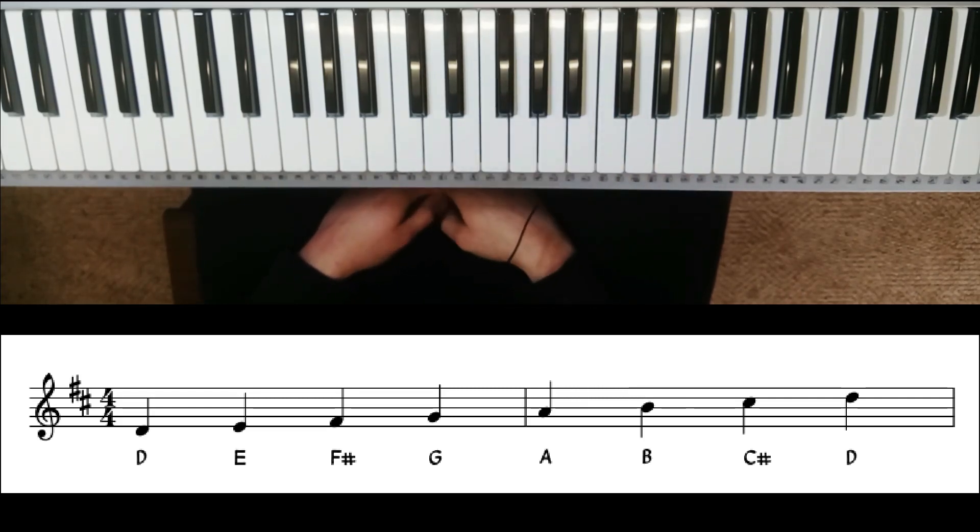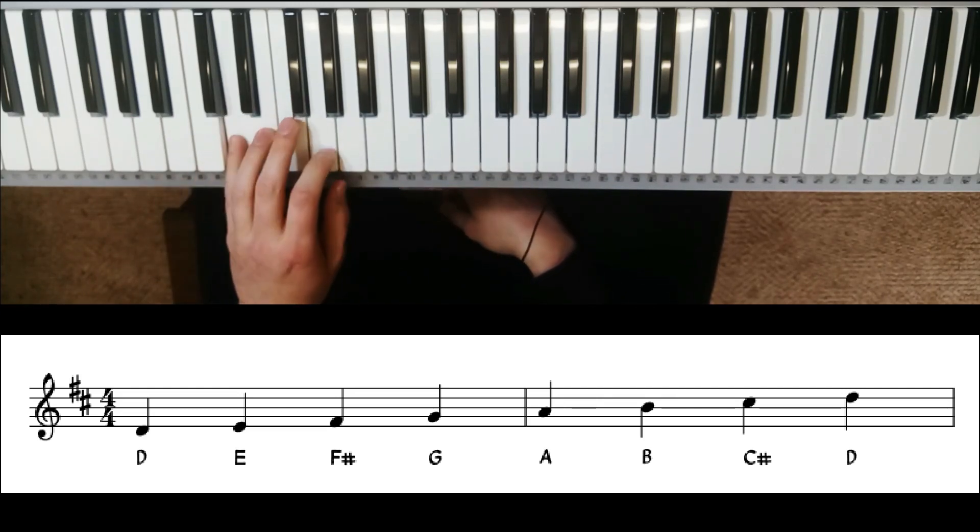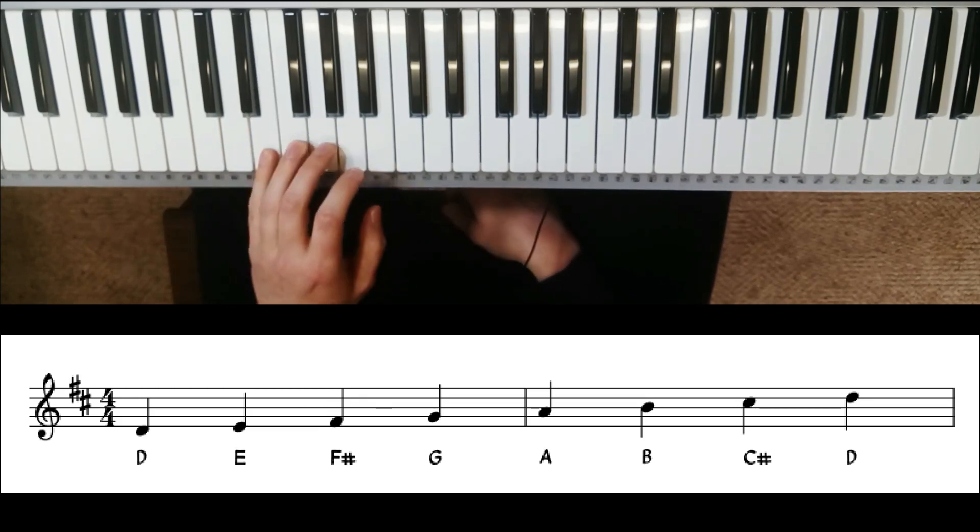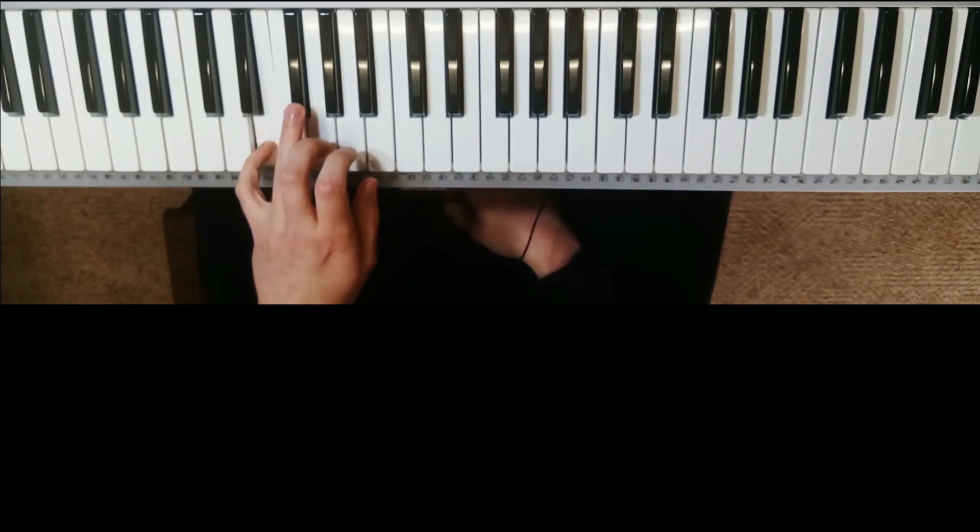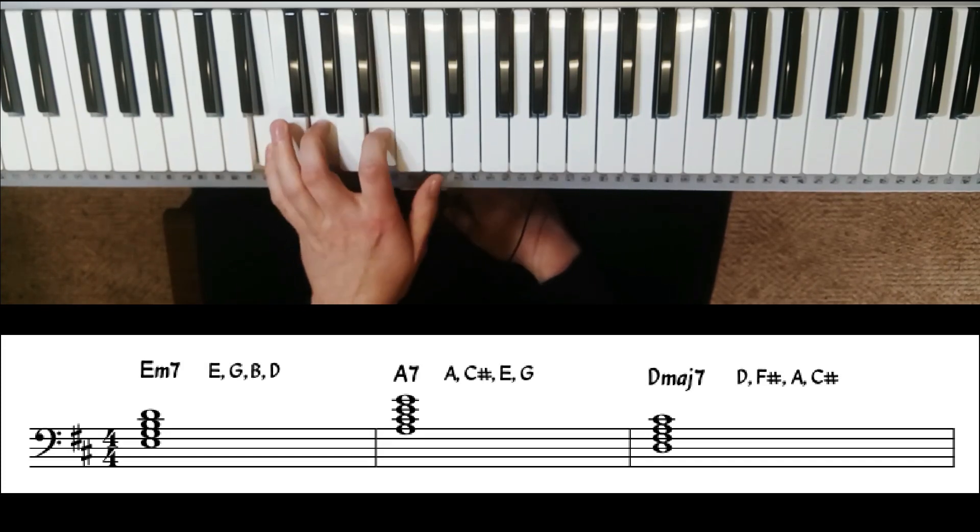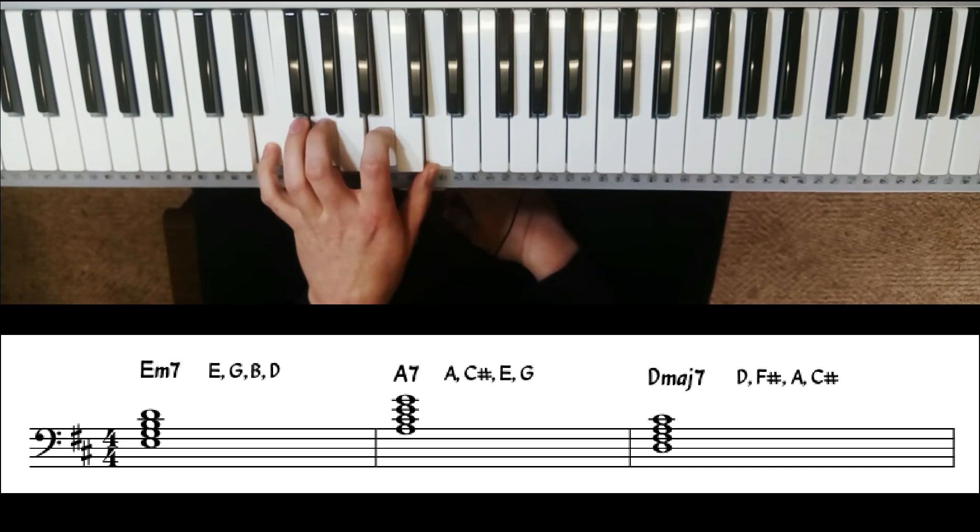Okay, so to run through our 2-5-1, D is note 1 and E is note 2. So our 2 chord will be built from the note E. Fortunately we jump past the F sharp, so we don't need to worry about that note yet. And there is our E minor 7 chord in the key of D. So we've got E, G, B and D. That's an E minor 7 chord.